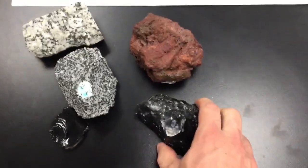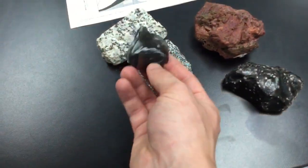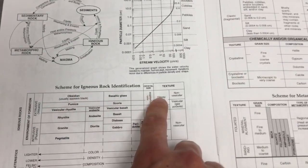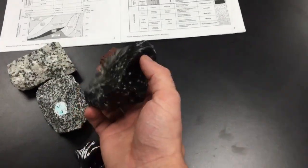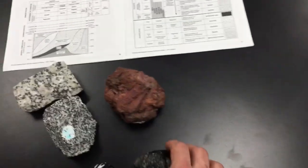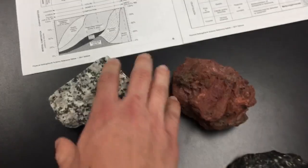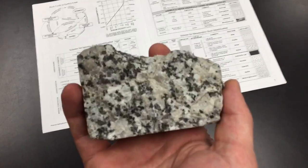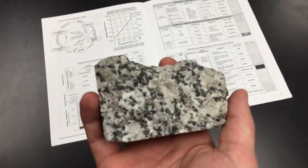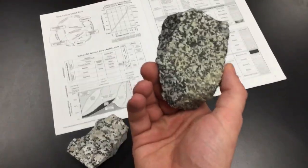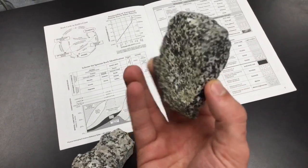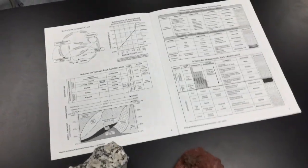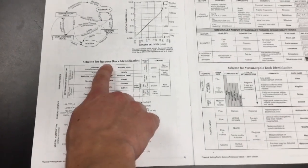Next we would look for a glassy texture. Both of these samples show a pretty nice glassy texture. A glassy texture would be like obsidian — looks like a chunk of glass, nice and shiny, sharp edges — that's an igneous rock. The other characteristic, not in the reference table, is interlocking or intergrown crystals. You can clearly see that these crystals have grown into each other, not cemented or compacted, but actually grown together.